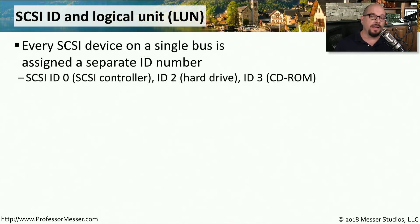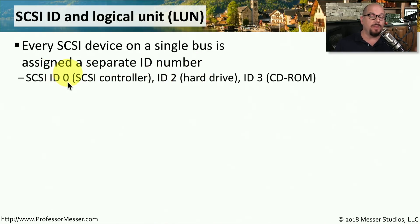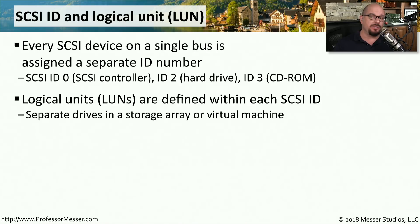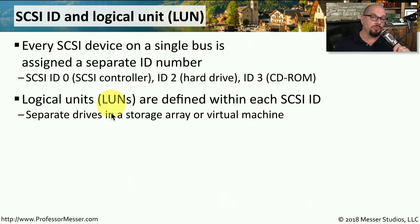When you connect a device onto a legacy SCSI bus, you assign it a separate ID number. It's very common for the SCSI controller to have an ID of 0, and then you might assign a hard drive an ID of 2 or an optical drive an ID of 3. Within these IDs, there's also the concept of logical units — separate drives within a drive array. The drive array would be assigned an ID number, and the individual drives within that array may have separate logical unit numbers.